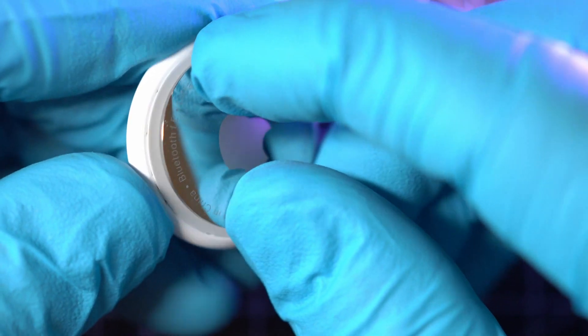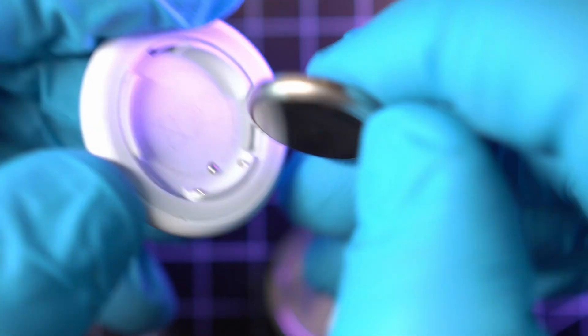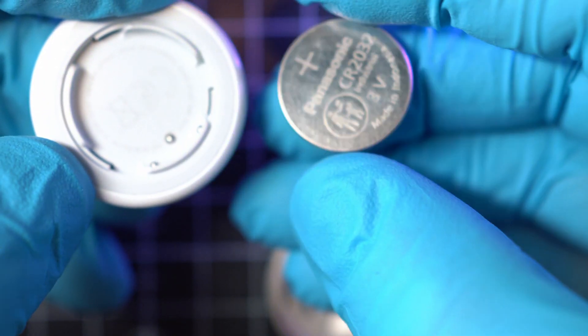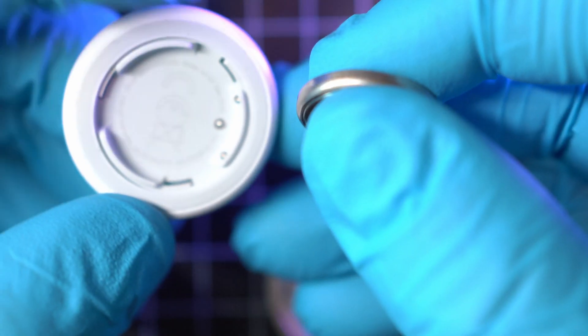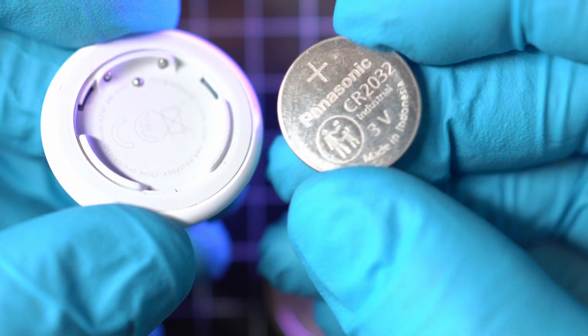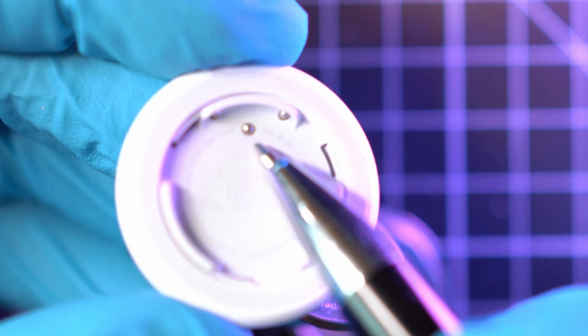First, remove the battery cover by pressing down and twisting it anti-clockwise. There is a single CR2032 battery providing power to the AirTag via these three terminals: two are for positive and one for the negative side of the battery.